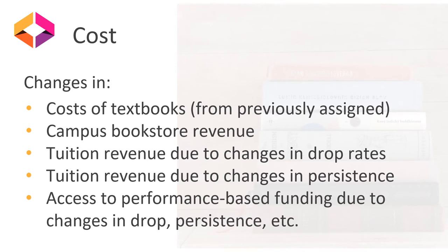Let's talk about cost. Cost metrics are often very important for campuses and OER programs. It is often the very first metric we can see and one of the top reasons we talk about OER, as it saves students money. Often when we think of cost metrics, we think of cost savings from switching from a commercial textbook over to an OER. This is a great place to start, but as you can see from the slide, there are lots of layers associated with costs, including the cost of textbooks,